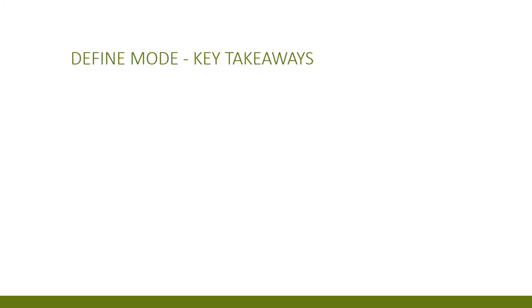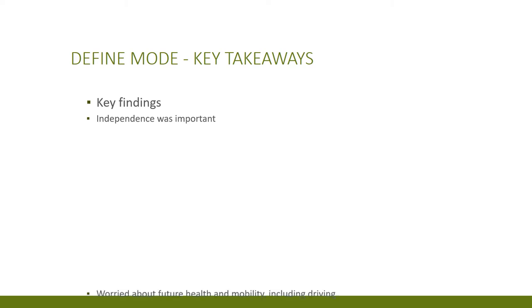Next, we articulated our key findings — things that surprised us or seemed important. We realized that our respondents rarely shared insights directly; they shared data and talked about their needs, and it was through our analysis that insights became apparent. Some key findings included: independence was important; seniors worried about their future health and mobility, including driving; they want to stay active as long as possible; and they need a sense of home — a place for family to gather.